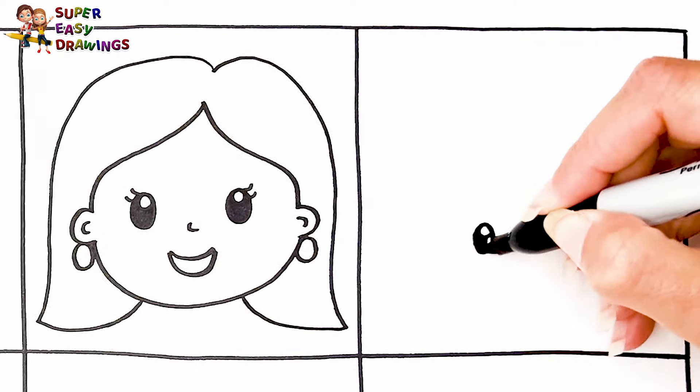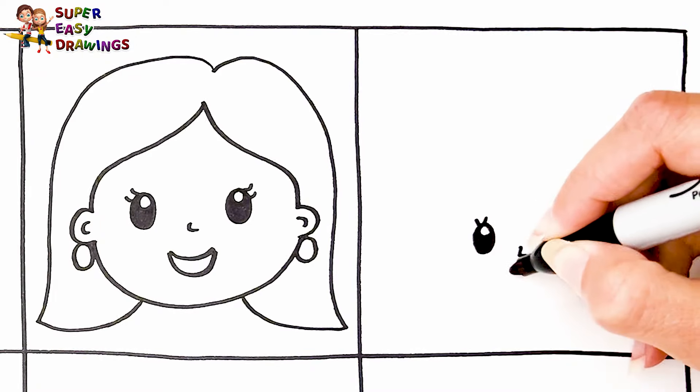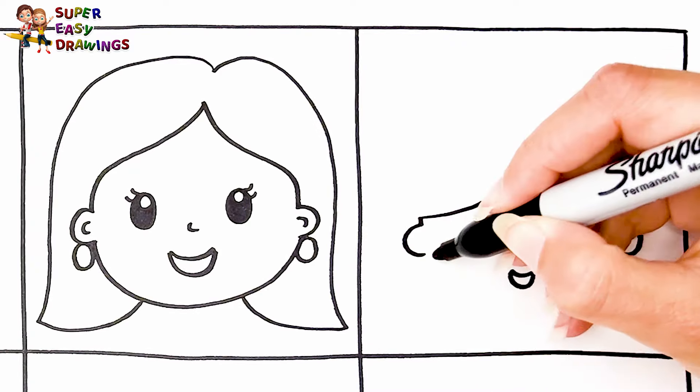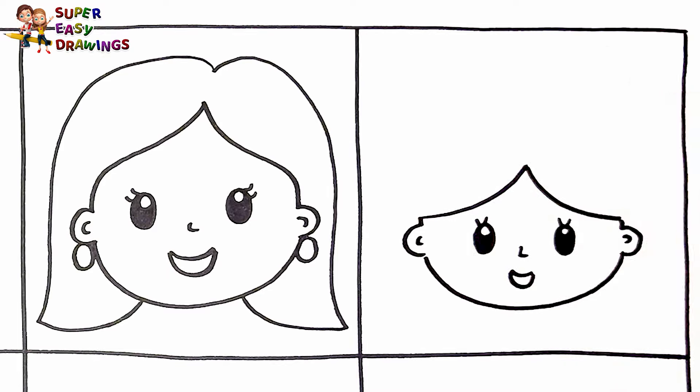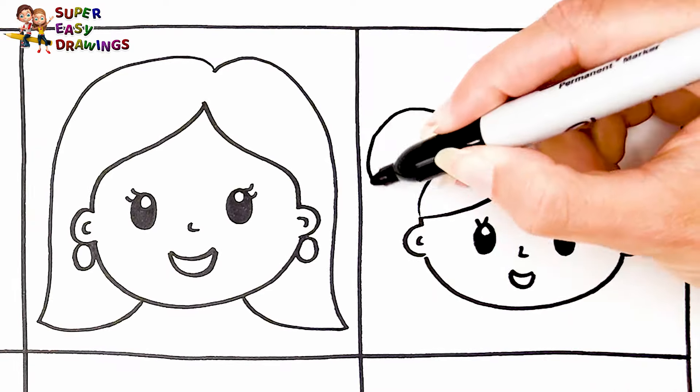Next to her I draw the little girl. I start with her eyes, nose and the smiling mouth. Then I draw her ears and face, and finally I draw her hair with pigtails on both sides.